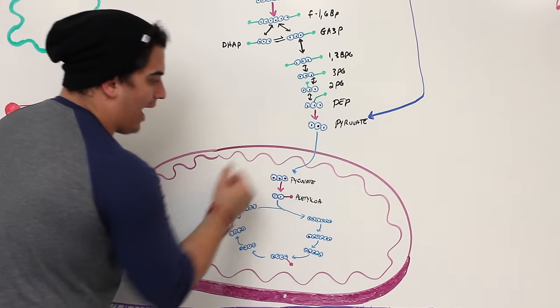Glucose 6-phosphate enters the smooth ER through a transporter called T1. Inside, glucose 6-phosphatase removes the phosphate, producing free glucose. That glucose exits the smooth ER through transporter T2 and then goes out through a glucose transporter into the bloodstream. This raises blood glucose levels — which was the original problem we needed to solve.